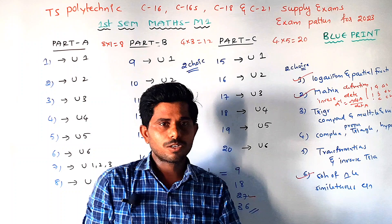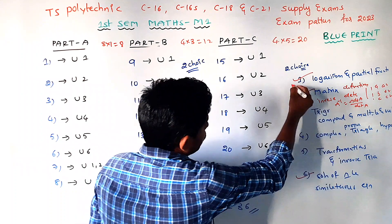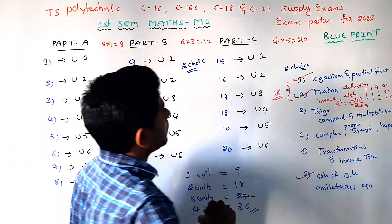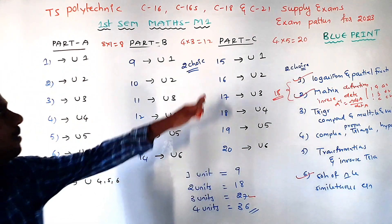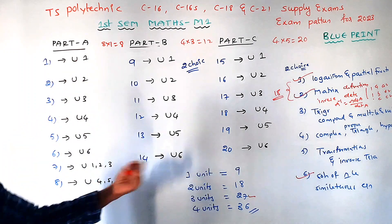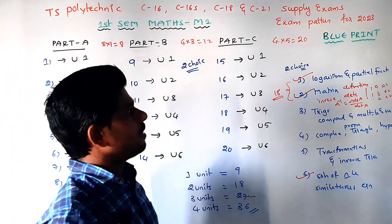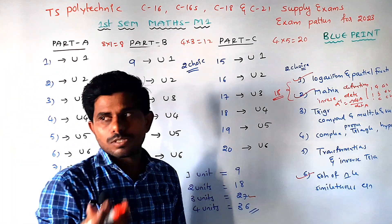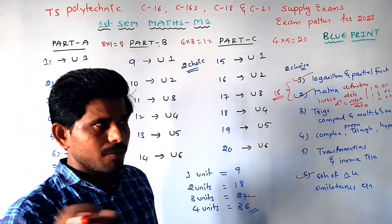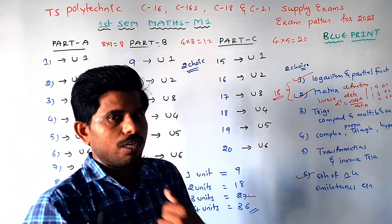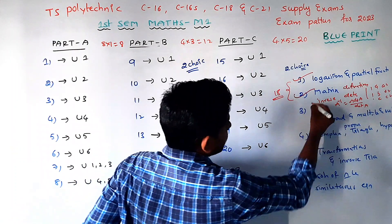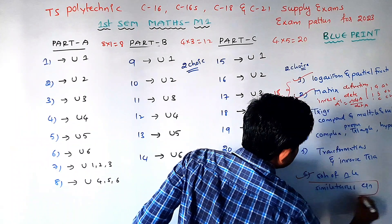With the first 2 units prepared, we can score 18 marks — 5 plus 3 equals 8 from Part A and B, plus more from Part C. You will be safe with just these two units. If you prepare matrices, you can also prepare simultaneous equations using Cramer's Rule, Matrix Inversion, and Gauss-Jordan methods.